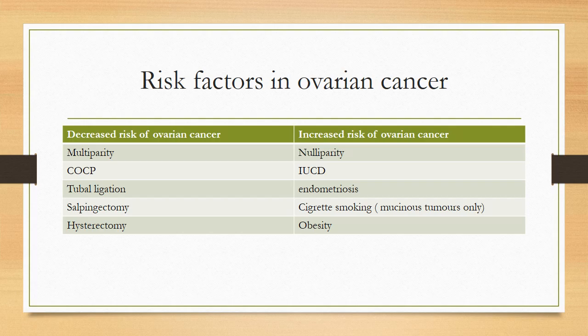There is decreased risk with multiparity and combined pills, because they suppress ovulation. Endometriosis is particularly associated with endometrioid and clear cell carcinoma. Tubal ligation, salpingectomy, and hysterectomy also reduce risk because they compromise blood supply to the ovaries and tubes.